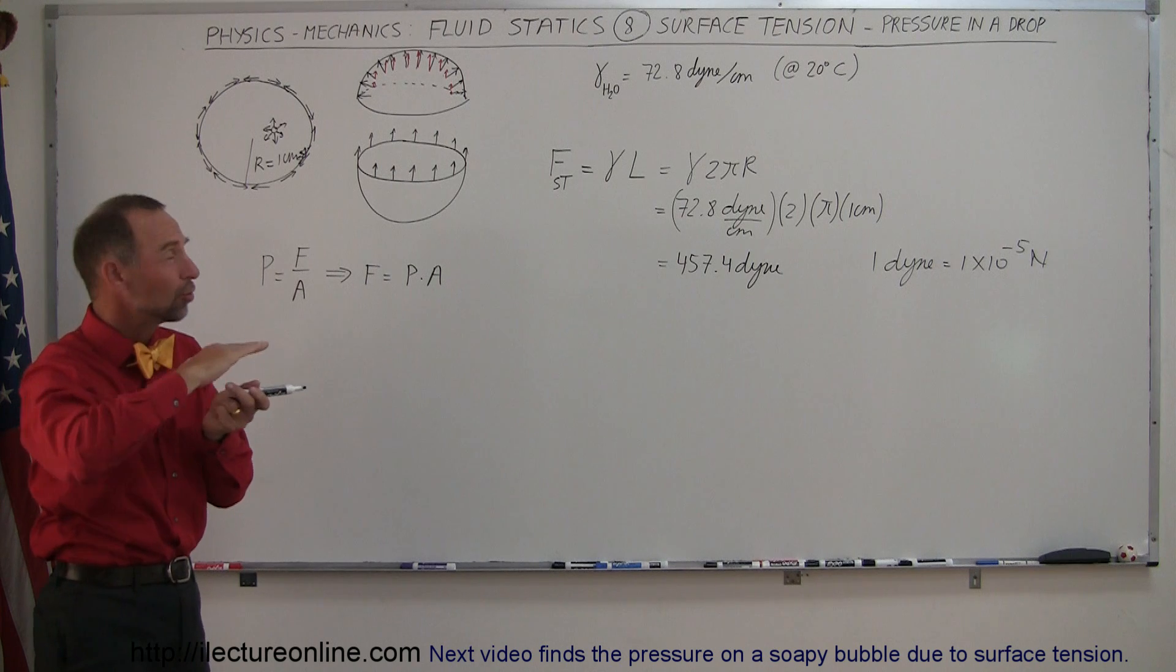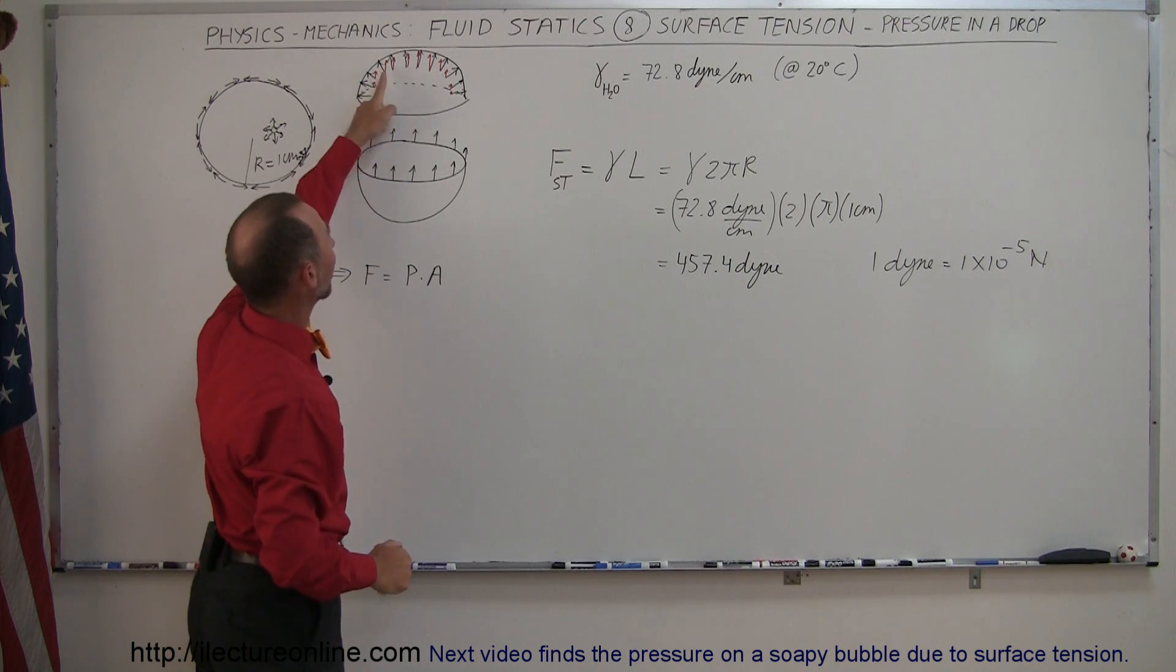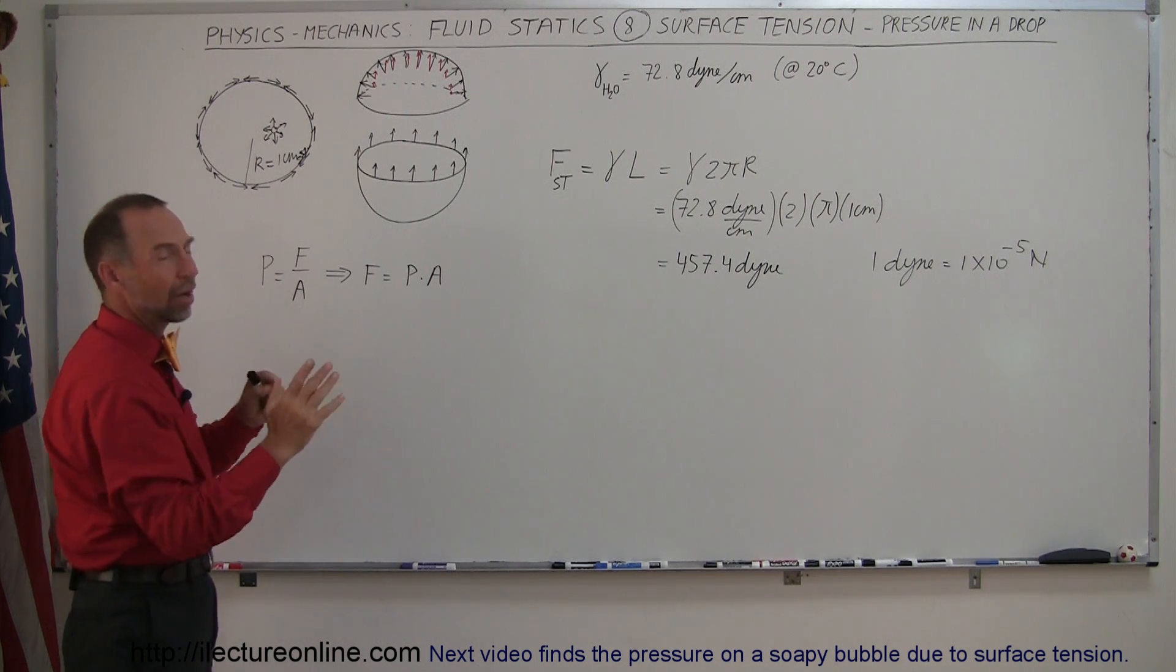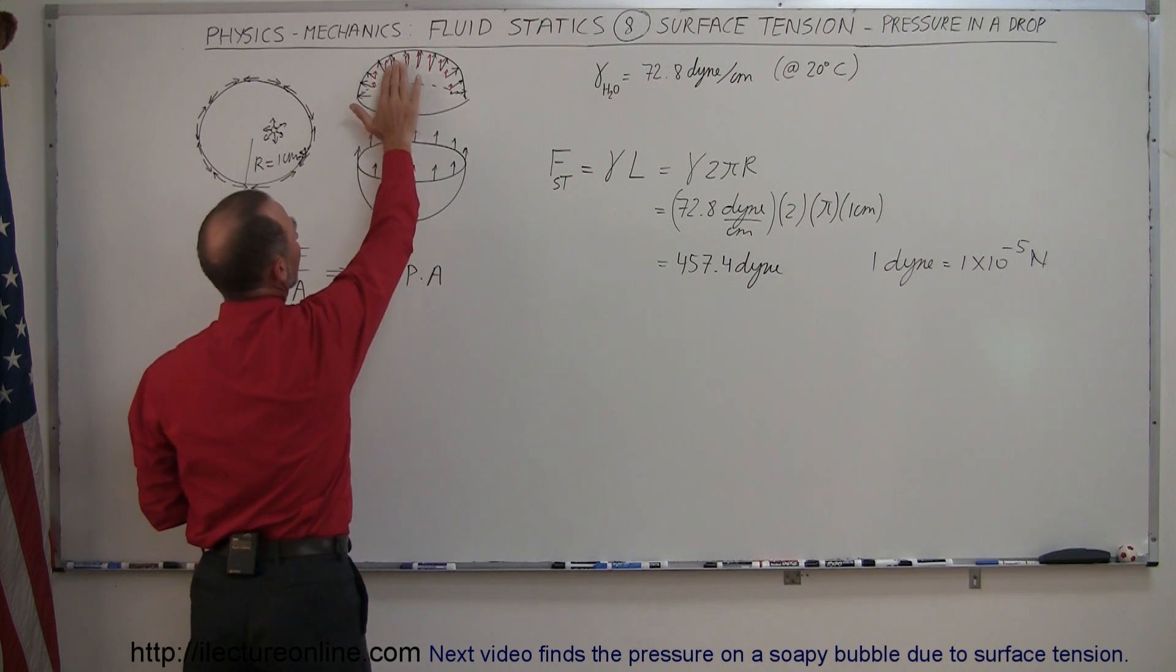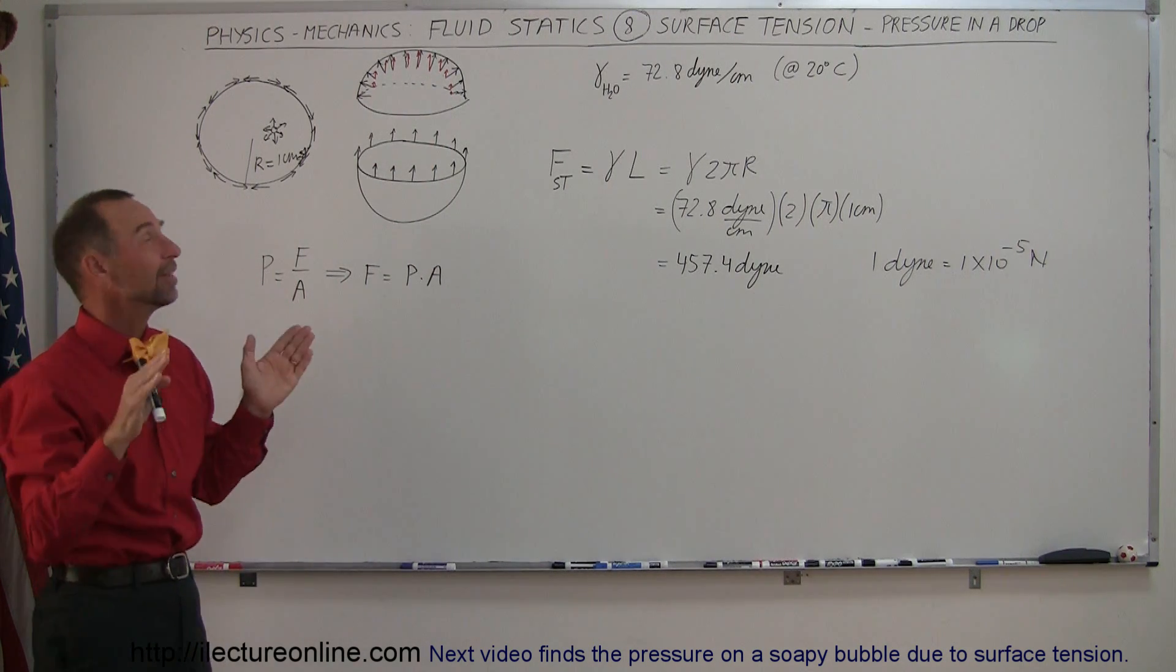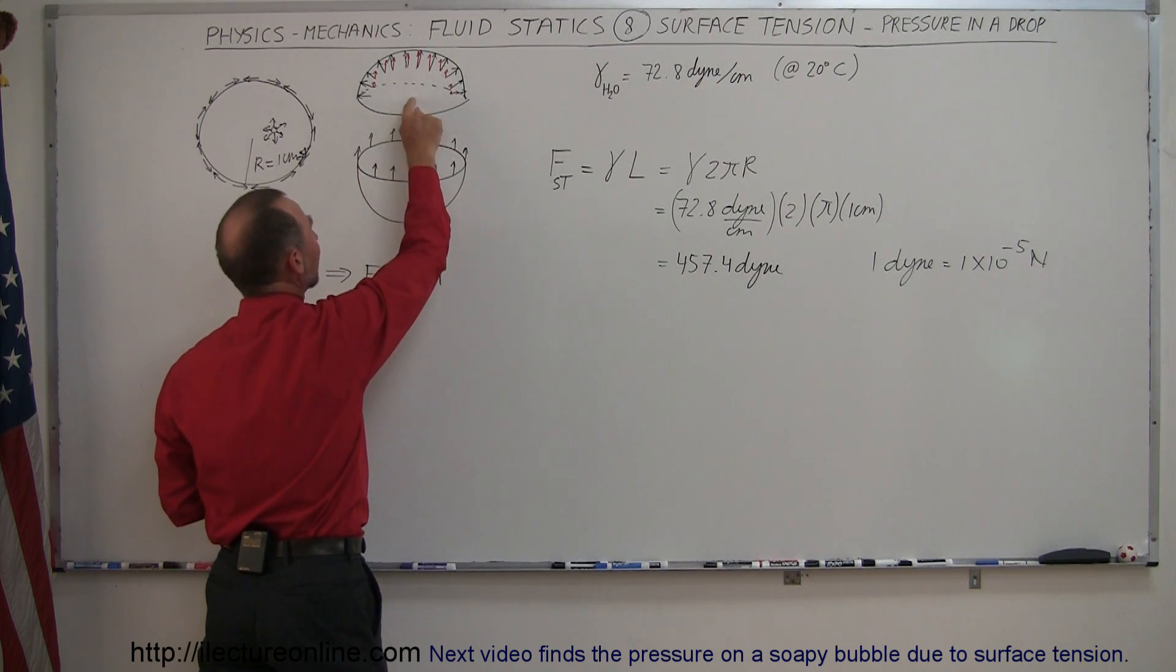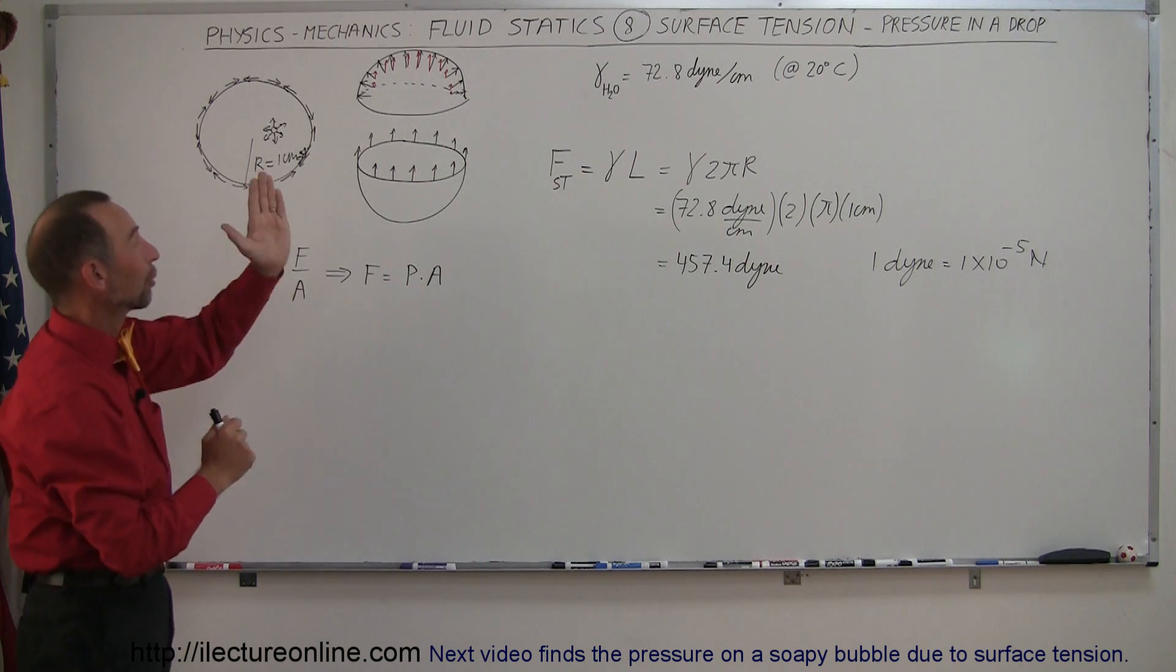But if I slice my drop into two slices, two semispheres, so to speak, then I can notice that the force vectors pushing in all directions have a vertical component to that. So if we think of the ones in the opposite direction like this, they push outward, so they don't cause any pressure in the direction of the force of the surface tension. So if I only consider the pressure in the direction of the surface tension, I only take the vertical components.